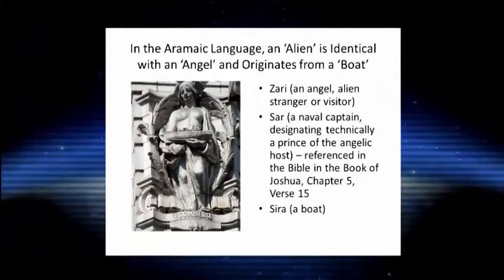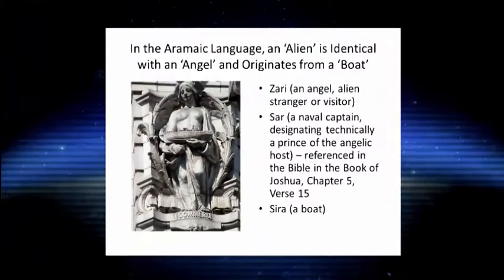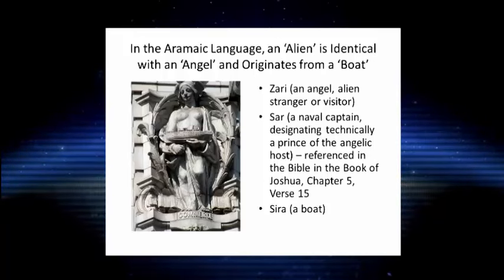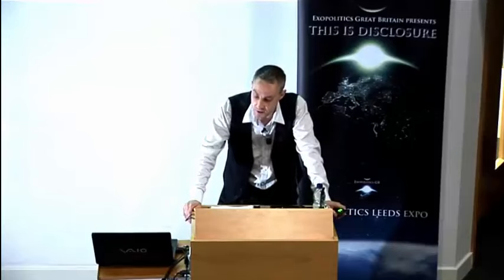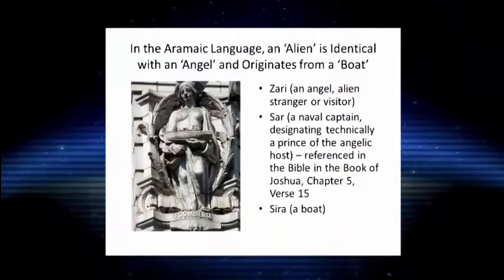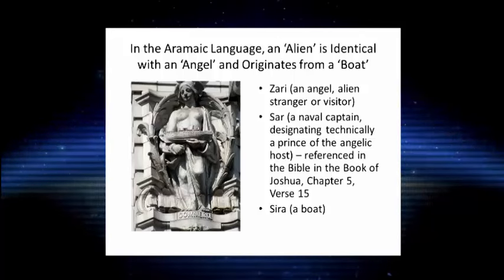In the Aramaic language, the term zari refers to an angel, but this is a polymorphic word — it also means an alien, stranger, or visitor. When they were talking about angels in the Aramaic and in the Bible, they were not just talking about angels or messengers, but also referring to aliens. The etymology is related to sar, which is a naval captain, designating technically a prince of the angelic host.